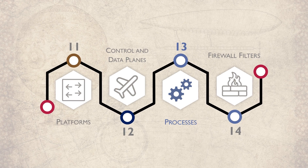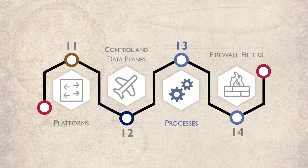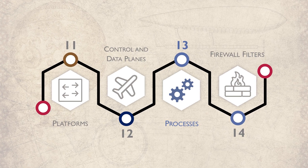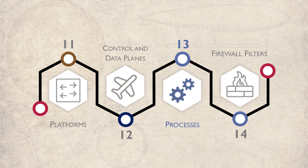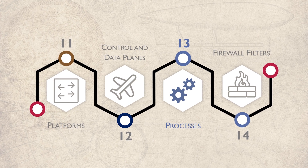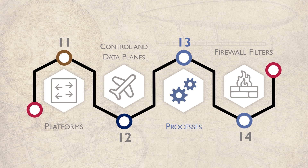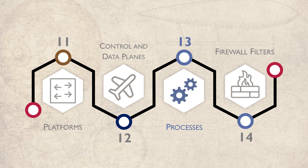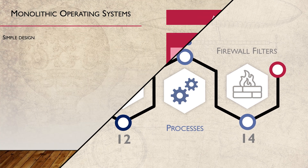There are different schools of thought when it comes to operating system design. Juniper's Junos and Cisco's iOS, for example, take very different approaches. We're going to see the advantages to the Junos modular design.